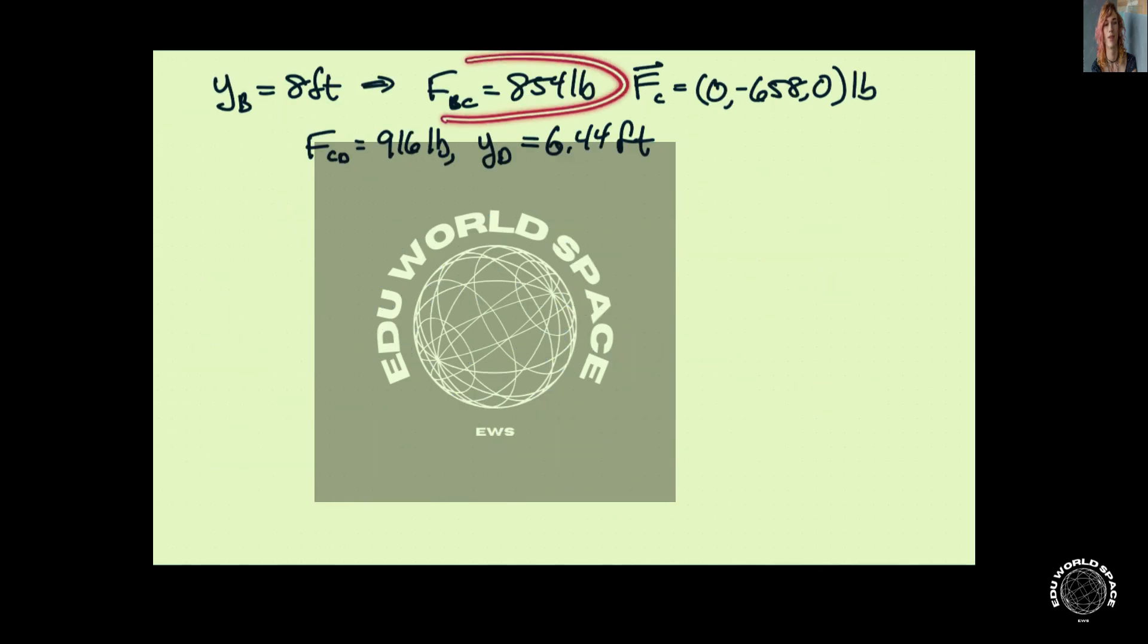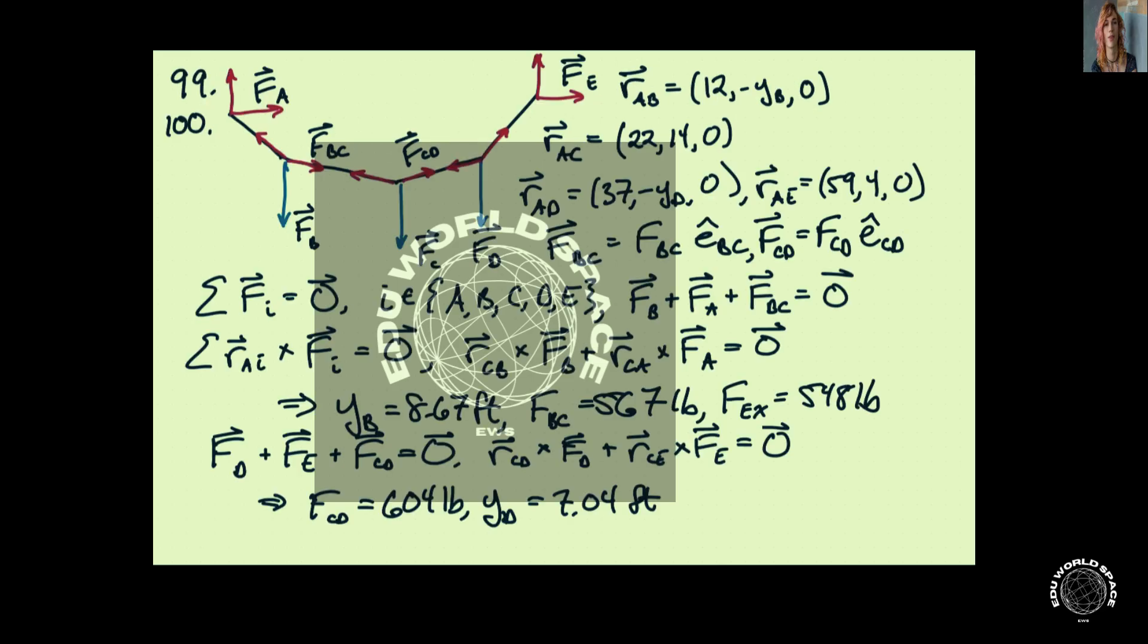We'll get that FBC is 854 pounds. FC, the applied load, is now minus 658 pounds in the vertical direction. So we have a load here, and it is greater than it was in the previous case.